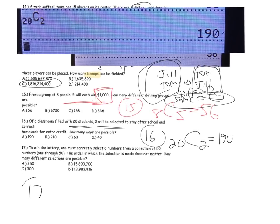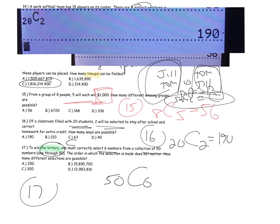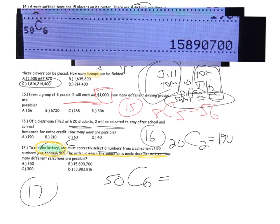Problem seventeen: to win the lottery, a person selects six numbers from a collection of 50. Lottery is one of those key words — anytime you're dealing with the lottery, you're dealing with combinations because the order doesn't matter. This problem even tells you the order does not matter. Write in your notes that lottery is always combinations: 50C6, or 15,890,700.